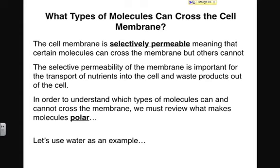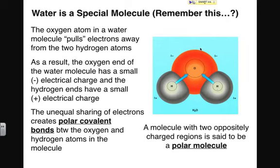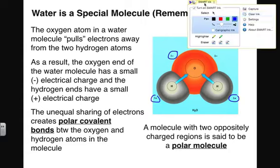Since the membrane is selectively permeable, we want to appreciate the types of molecules that can and cannot cross. Water is a classic example of a polar molecule — because of the unequal distribution of charge, electrons spend more time closer to the oxygen atom, giving oxygen a slight negative charge and hydrogen a slight positive charge. That separation of charge makes the molecule polar. So if you can look at a molecule and predict that it's polar, you're beginning to get a sense of which molecules can and cannot cross the membrane freely.